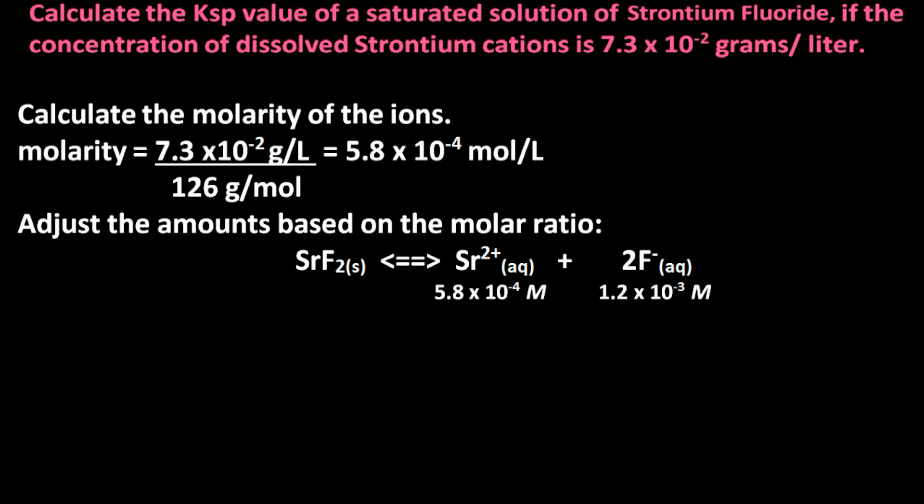Now adjust the amounts based on the molar ratio. Strontium fluoride will ionize to produce 1 mole of strontium 2+ cation, which has a molarity of 5.8 times 10 to the minus 4 moles per liter, and 2 moles of fluoride anion in aqueous solution. Since the ratio is 1 to 2, we must double the molarity to accommodate the fluoride anion. So at equilibrium, the concentration of fluoride anion will be 1.2 times 10 to the minus 3 molar.